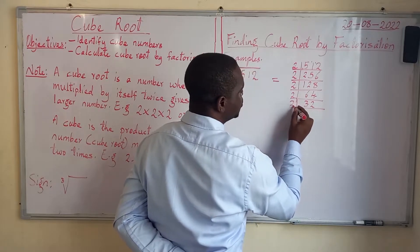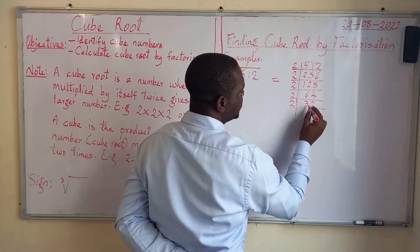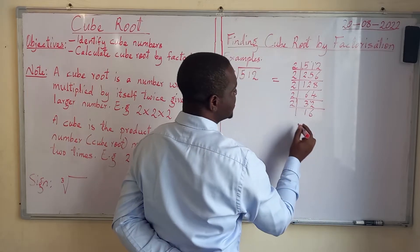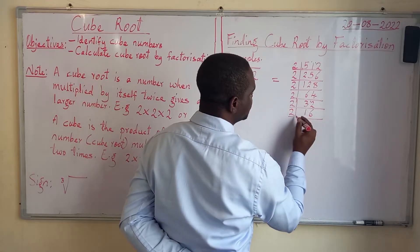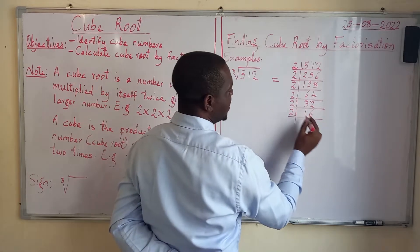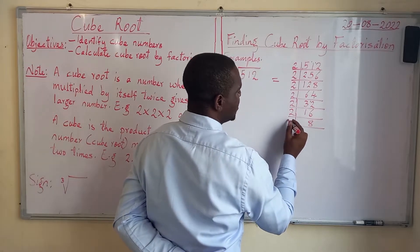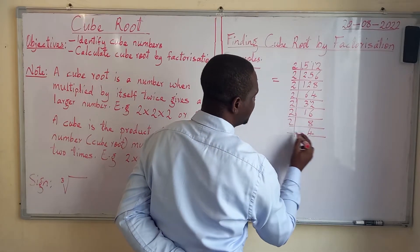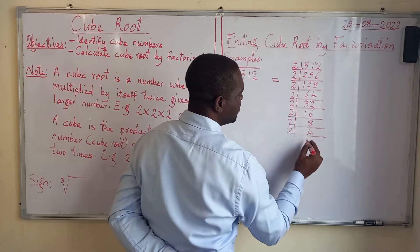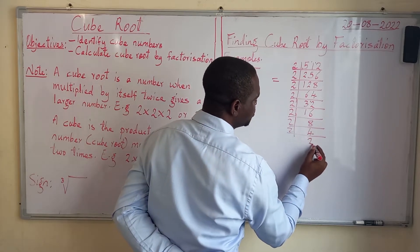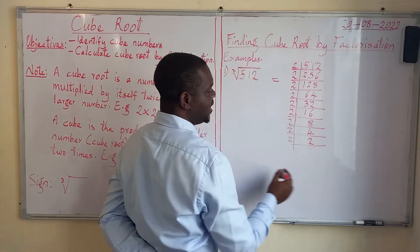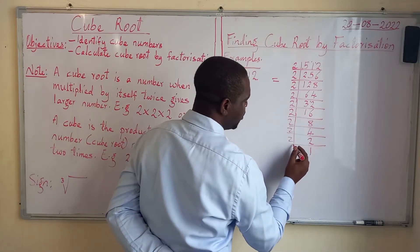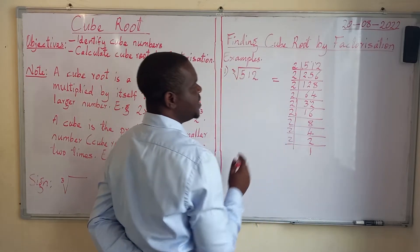Continuing the division: 8 divided by 2 is 4. 4 divided by 2 is 2. And 2 divided by 2 is 1. At this point we can end here, giving us nine 2s as prime factors of 512.